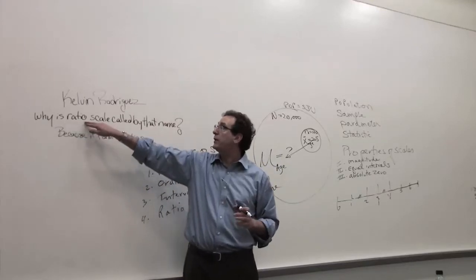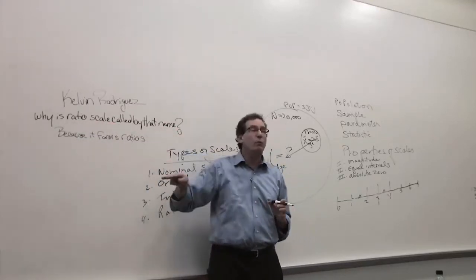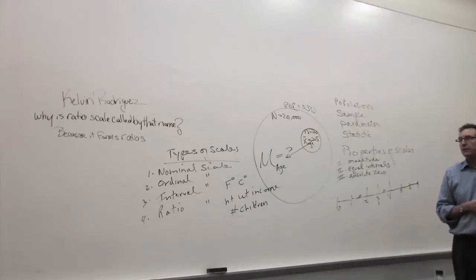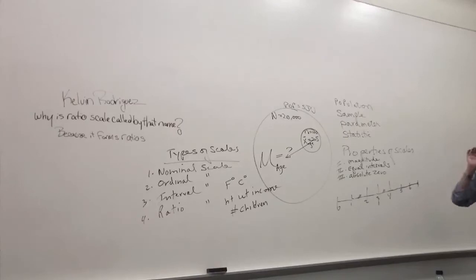Of course, numbers that come out of a ratio scale can be compared by forming ratios. Okay, so that's the answer to the question. You guys who haven't had me last term don't realize how lucky you are because we could spend hours fighting about this. Kelvin, you can form ratios or form ratios. I don't know if you can argue about it as it is, but if you put the word can form ratios, it's a little bit clearer.